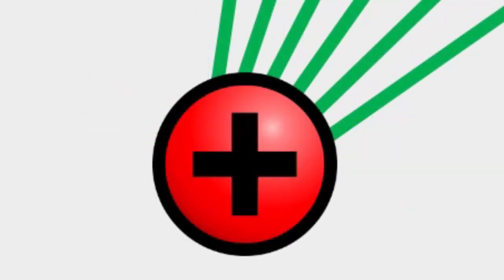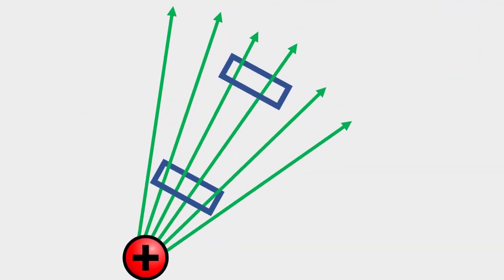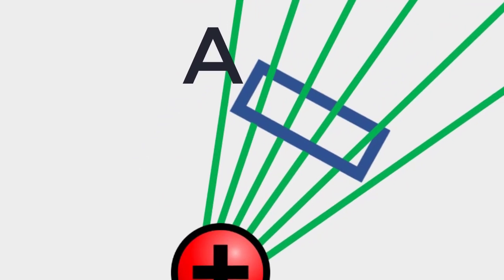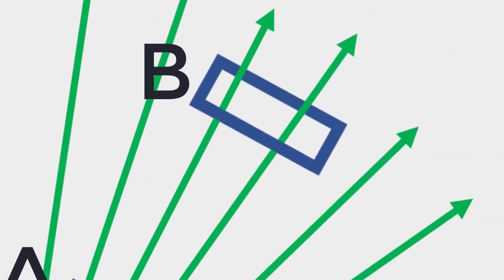Here is a positive charge. We can imagine two equal and small elements of area placed at the points A and B, which are normal to the field lines. Four lines are passing through the area element placed at A. Only two lines are passing through the area element placed at B.